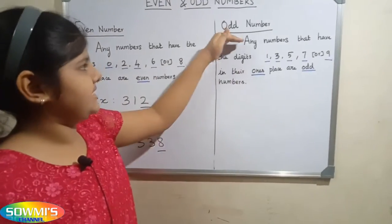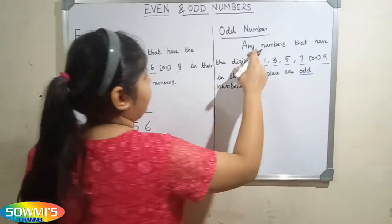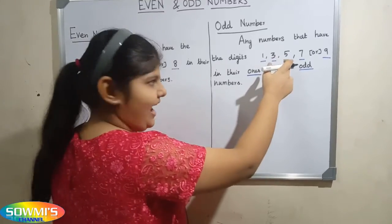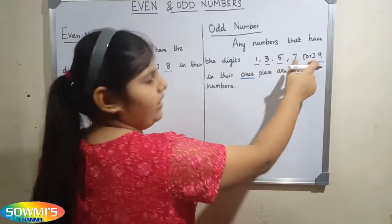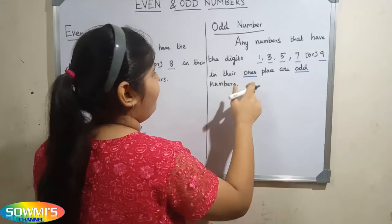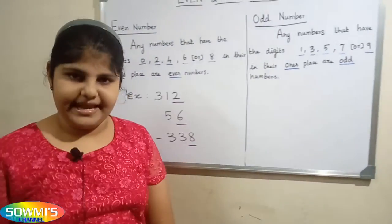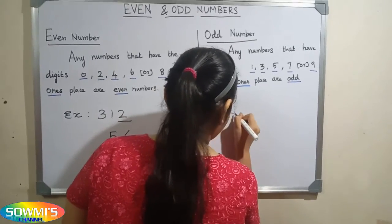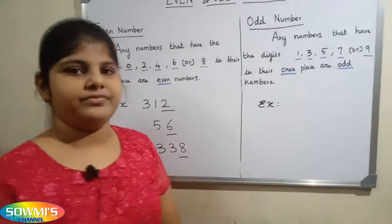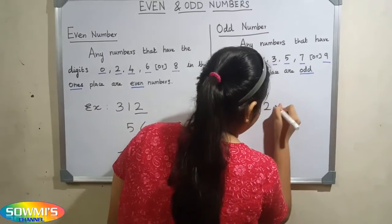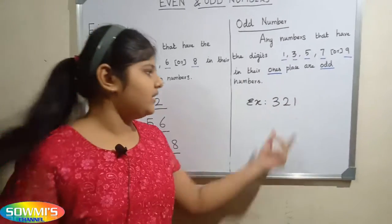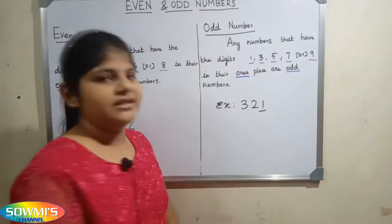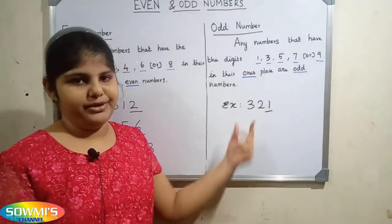Now we will see odd numbers. Any numbers that have the digits 1, 3, 5, 7, or 9 in their ones place are odd numbers. For example, 321 — look at the number. In the ones place it ends with 1, so this is an odd number.